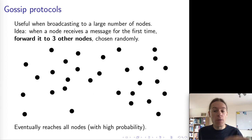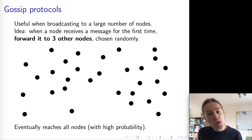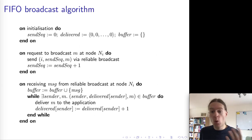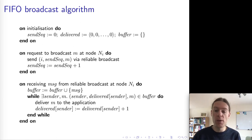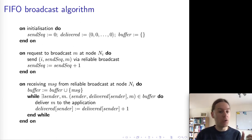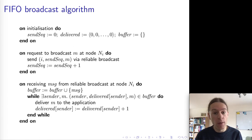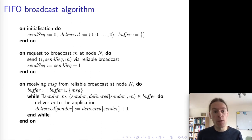Okay, so that gives us the reliability. Now next, let's look at the ordering. So if we want to achieve FIFO broadcast, for example, that means we have to ensure that all of the messages by the same sender are delivered in the right order. This is an algorithm of how we might achieve this.